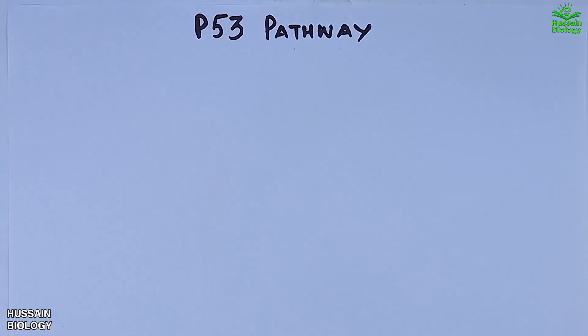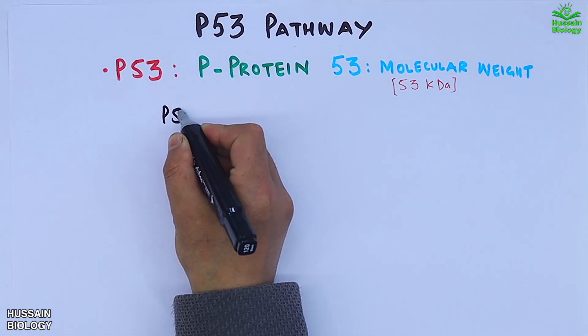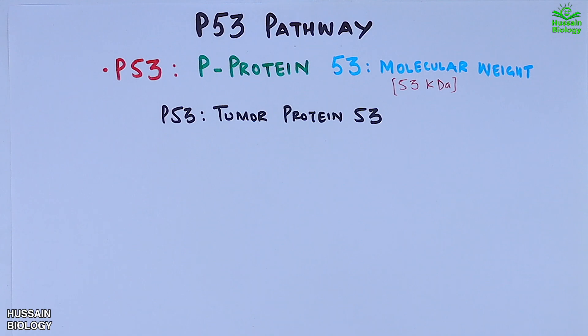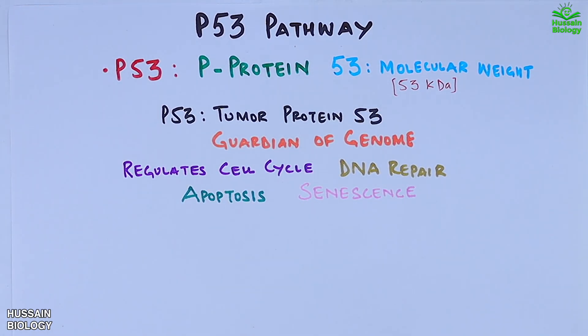The p53 pathway. The p53 stands for protein with 53 molecular weight, also known as tumor protein 53, and referred to as guardian of genome since it regulates cell cycle, DNA repair, apoptosis, and senescence.